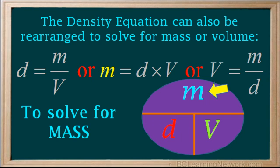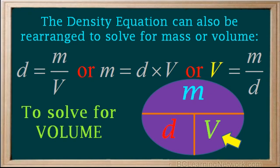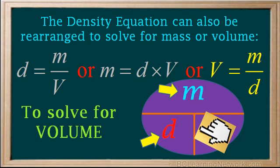To solve for mass, put your hand on the m, so m equals d times v. And to solve for volume, put your hand on the v, so v equals m over d.